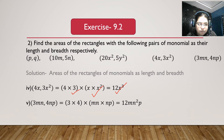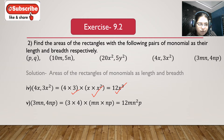Fifth bit: 3mn and 4np. 3mn is the length and 4np is the breadth. Area is 3mn multiplied with 4np, giving 3 multiplied with 4 is 12, and mn multiplied with np gives m, n square, p. So the area is 12mn square p.